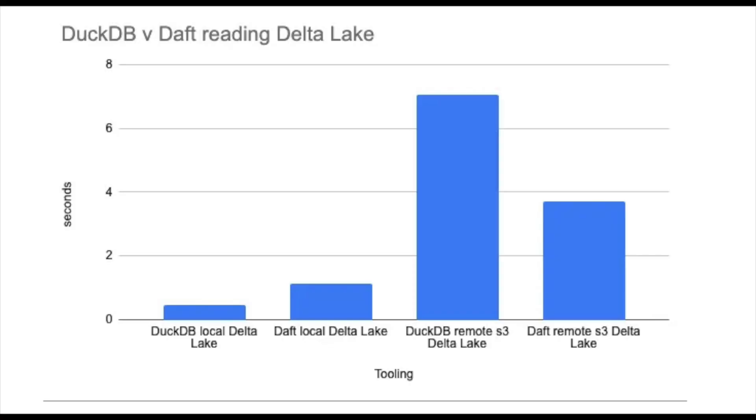Here's a chart: DuckDB is fastest with local runtime, Daft is a bit slower. But when it comes to S3 remote Delta Lake, DuckDB is slow — Daft is much faster. This shows the importance of testing your tools in a real-life environment. DuckDB clearly has some work to do around reading remote files, while Daft has done a better job handling remote file storage. DuckDB is still known for super-fast aggregation, but this is an interesting result worth thinking about.